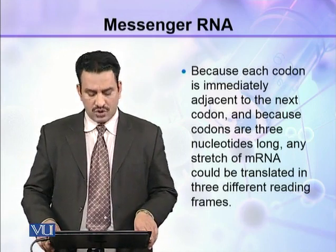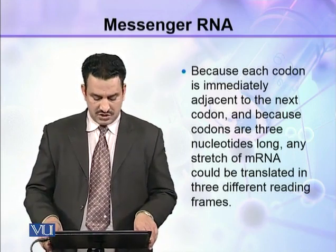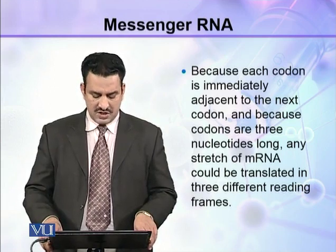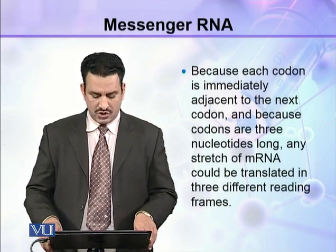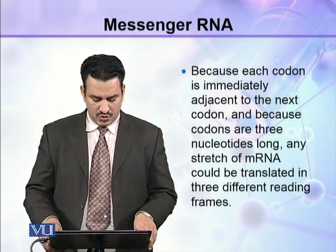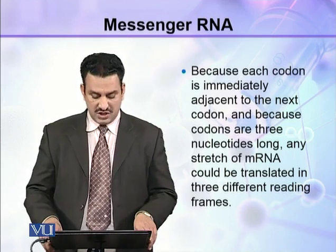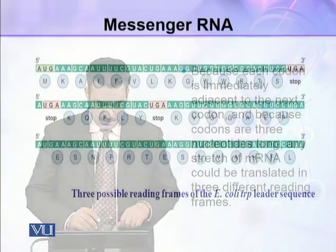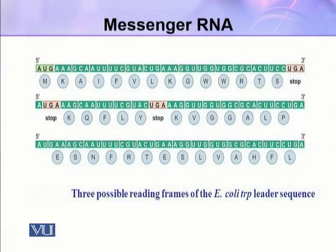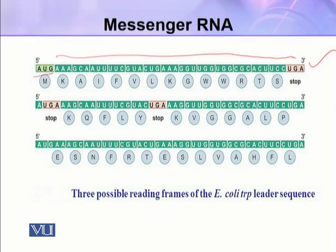Because each codon is immediately adjacent to the next codon, and because codons are 3 nucleotides long, any stretch of mRNA could be translated in 3 different reading frames. For example, in the first case, reading starts at AUG and the entire reading frame proceeds until it stops at UGA.